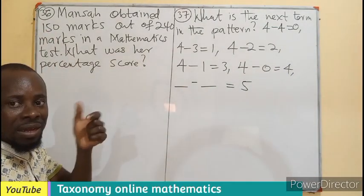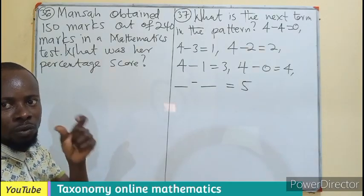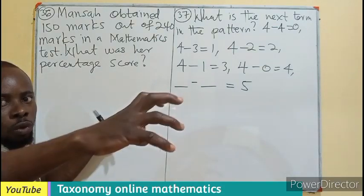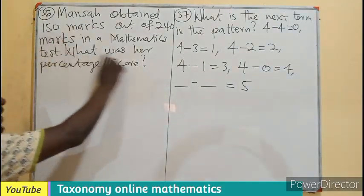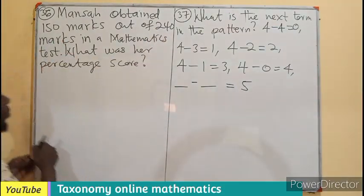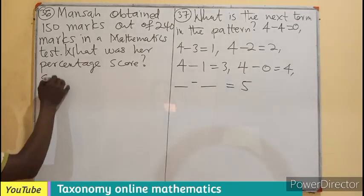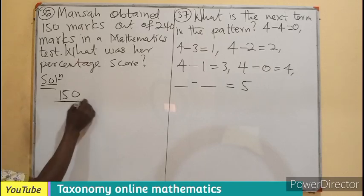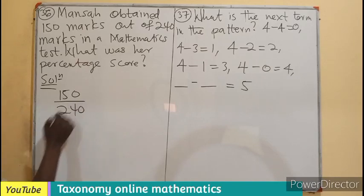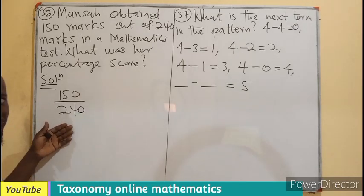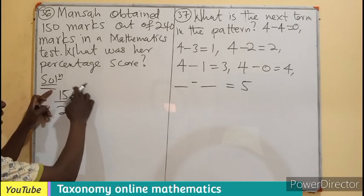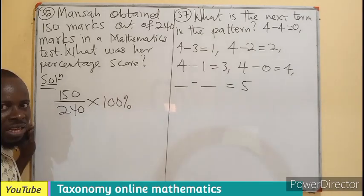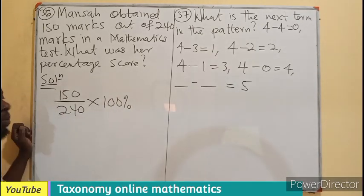What's the fraction of marks obtained here? You are taking a part out of the whole. This part is taken out of this whole. I'll be having 150 as part of the marks obtained out of 240 marks. This is the fraction of marks you obtained. To convert this into a percentage, you multiply by your 100%.